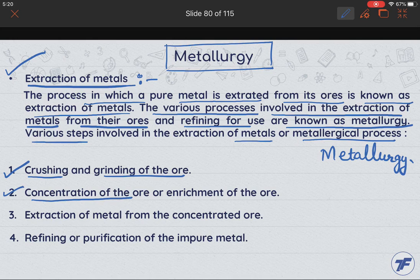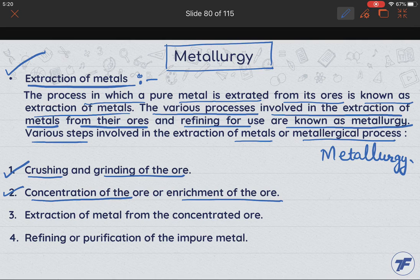The second step is the Concentration of the Ore, also known as Enrichment of the Ore. In this step, we have some special types of impurity particles that we can remove from the ore. Thirdly, we have the Extraction of Metal from the Concentrated Ore.